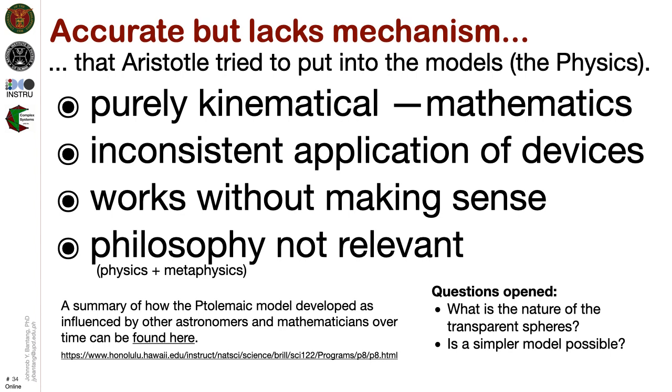While the Ptolemaic system can be made as accurate as possible with respect to available astronomical data, one can say that it is purely kinematical. It only quantitatively described the motion of celestial objects without making any philosophical or mechanical basis proven by the inconsistent application of the devices. The accuracy of the Ptolemaic system proved enigmatic by way of interesting questions it elicits: Does the Ptolemaic system correspond to reality? What is the nature of the transparent spheres? Is there a simple model possible? Is it the only alternative they have?